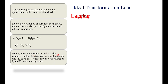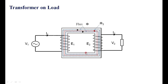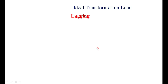We will now draw the phasor diagram for a lagging load. Lagging load means I2 lags V2. Leading load means I2 leads V2, which is capacitive in nature. Unity power factor load means V2 and I2 are in the same phase.